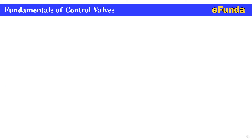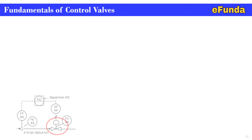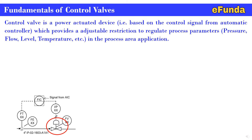For better understanding of control valve fundamentals, one can refer to the flow loop where FE, FT, FIC, I2P converter, and the final control element — the control valve — are shown. A control valve is a power-actuated device based on the control signal from an automatic controller, that is FIC, which provides an adjustable restriction to regulate process parameters such as pressure, flow, level, and temperature in the process area application.